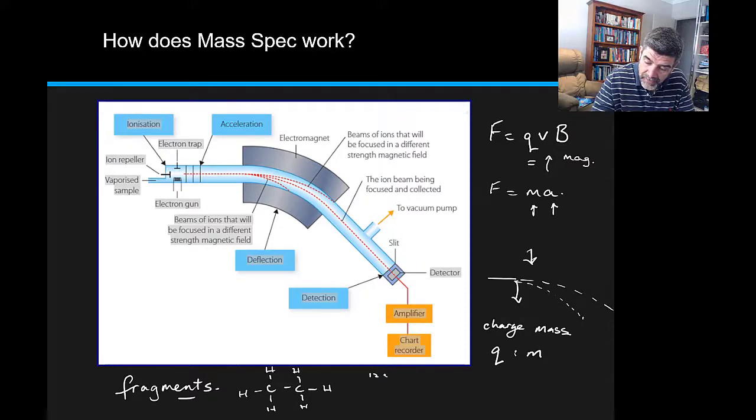There's 12 times 2 as there's two carbons, and there's six 1s which is hydrogen. So we would expect to have a mass of around about 30 atomic mass units as this comes scooting through.